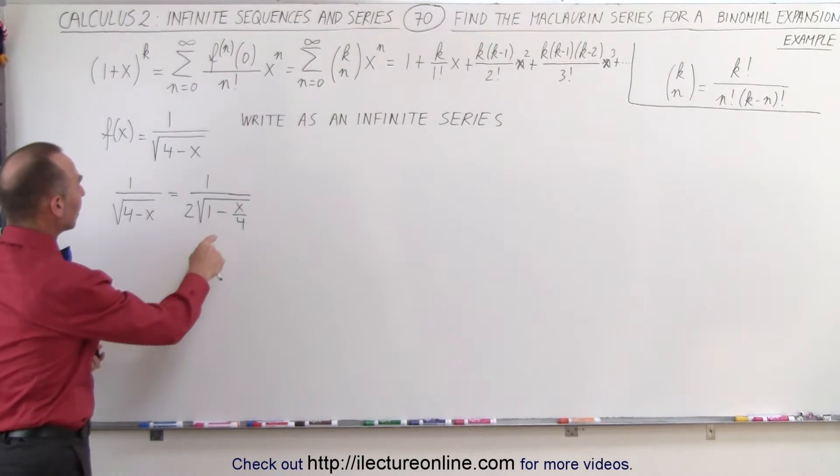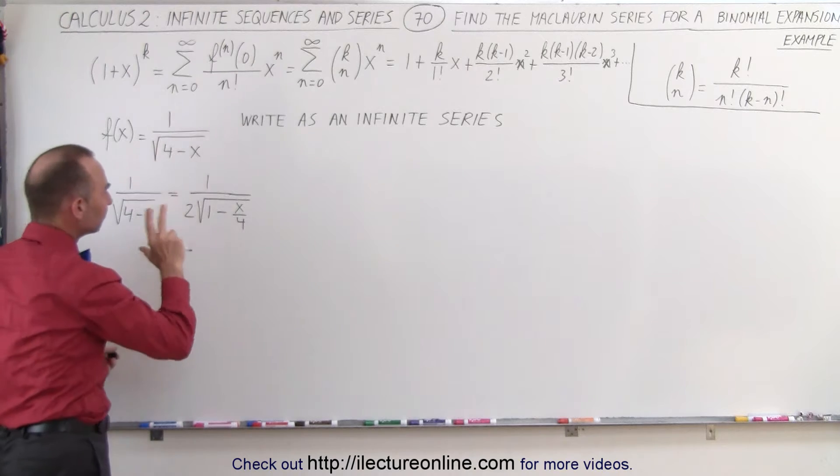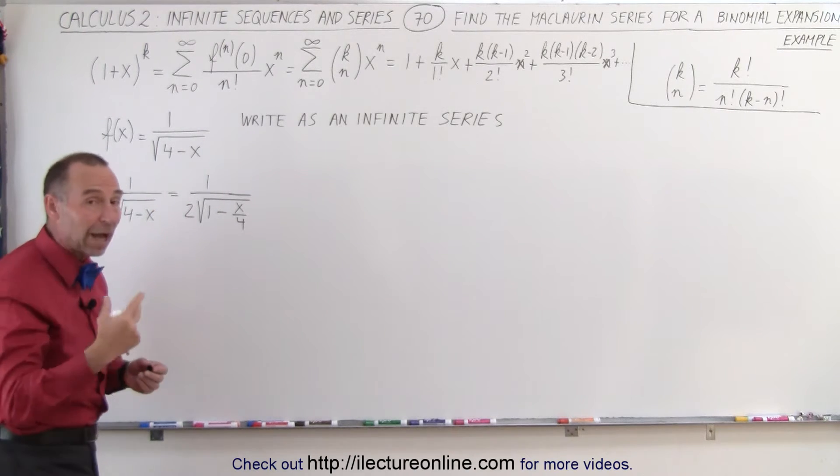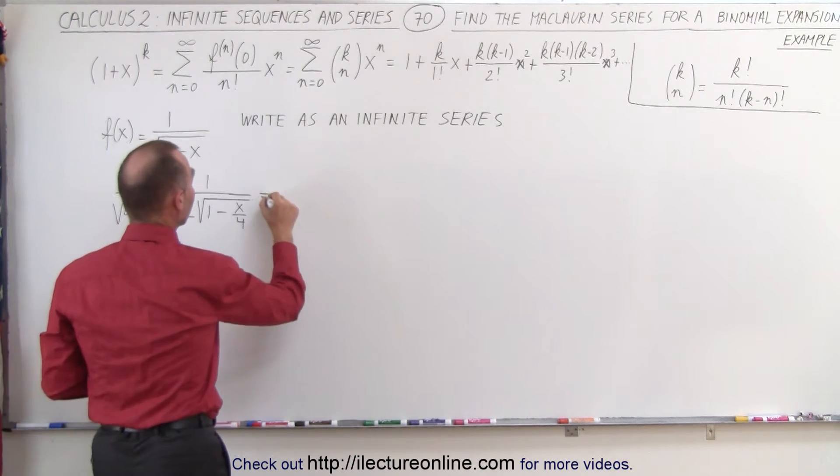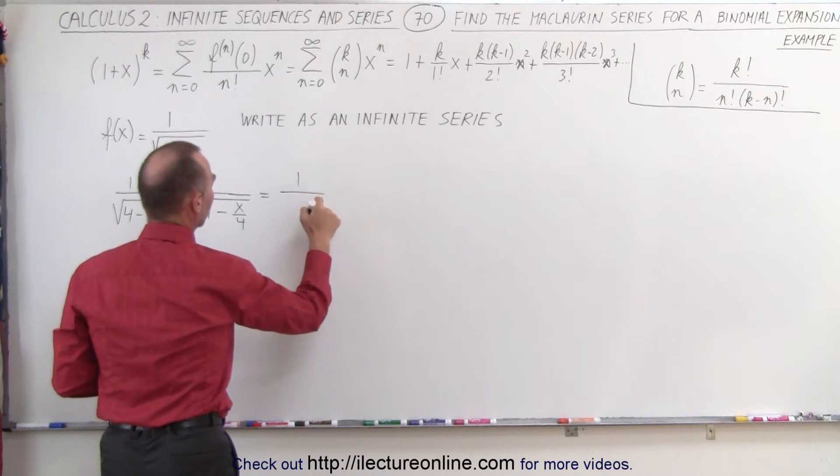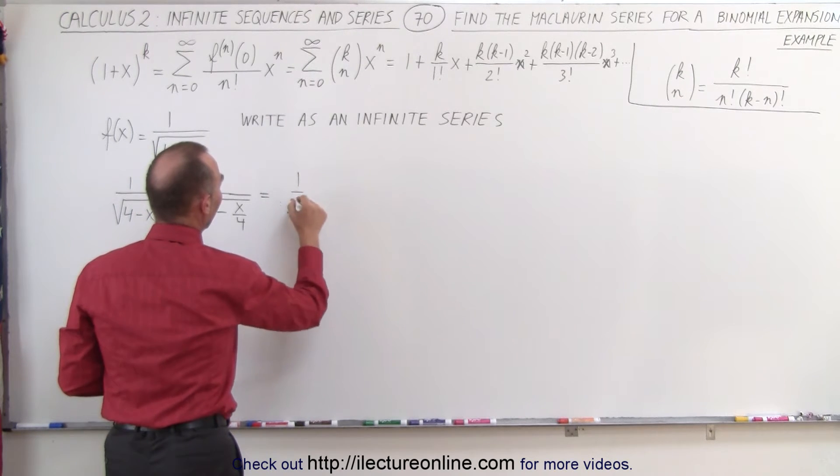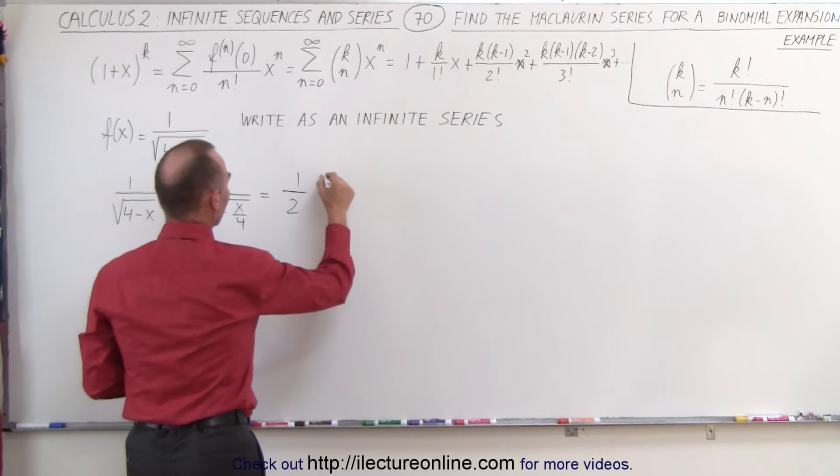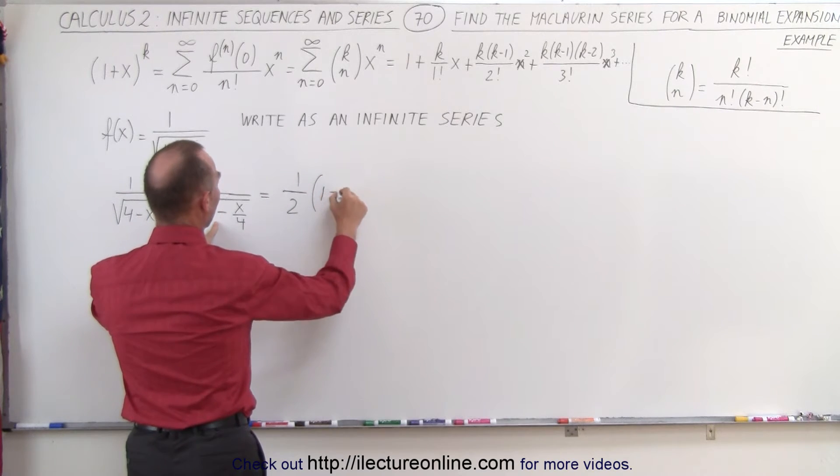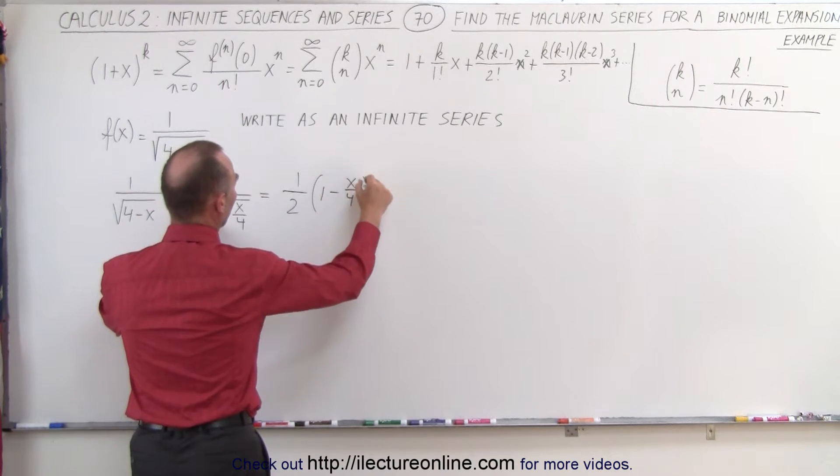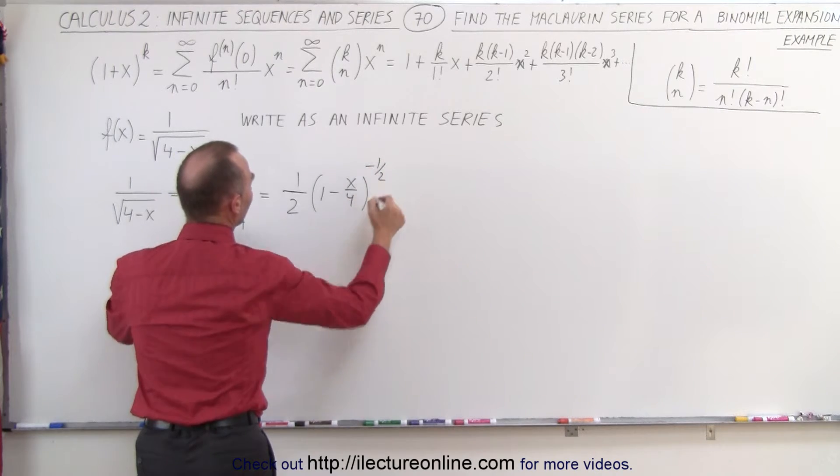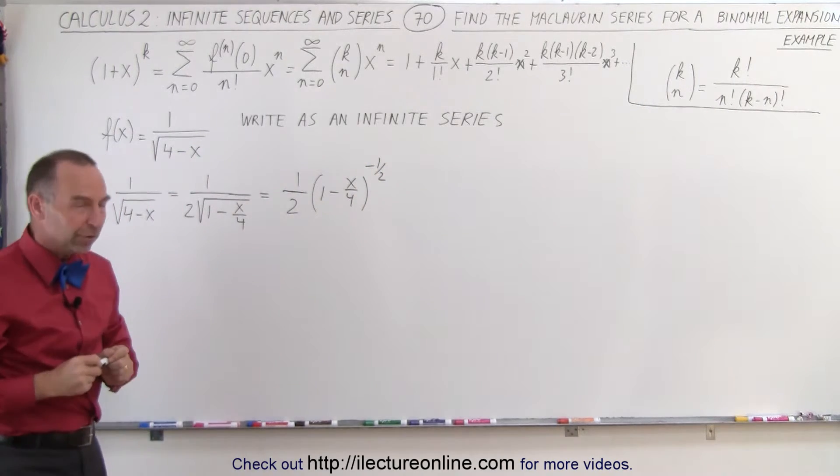Now it's beginning to look a little bit more like this. Not quite. So what we can do now is write as follows. This can be written as 1 half times the quantity 1 minus x over 4 raised to the minus 1 half power. We're almost there.